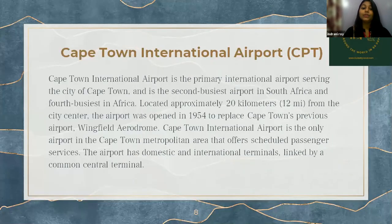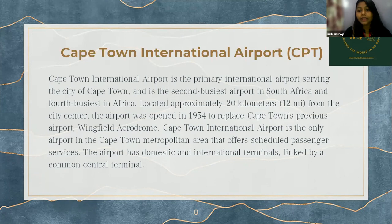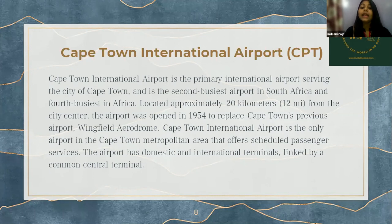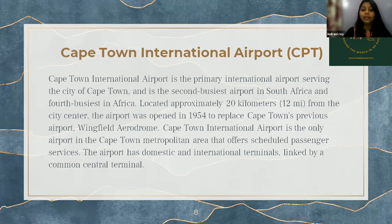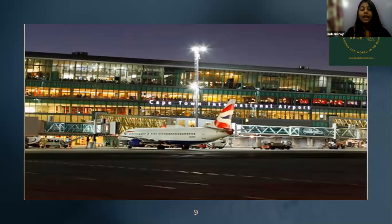Next one is Cape Town International Airport, serving the city of Cape Town. It is the second busiest airport in South Africa and the fourth busiest in Africa. Located approximately 20 kilometers, or 12 miles, from the city center, the airport was opened in 1954 to replace Cape Town's previous airport, Wingfield Aerodrome. It is the only airport in the Cape Town metropolitan area offering scheduled passenger services, with domestic and international terminals linked by a common central terminal. Here you can see the picture of Cape Town International Airport.